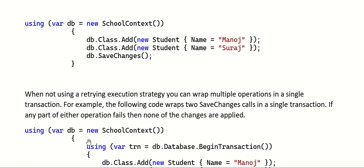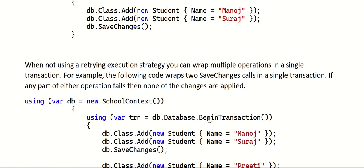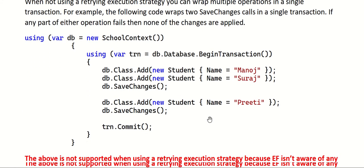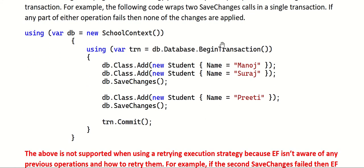When NOT using the retrying execution strategy, you can wrap multiple operations in a single transaction. For example, the following code wraps two SaveChanges calls in a single transaction — if any part of either operation fails, none of the changes are applied. In this modified code snippet I'm not using a retry mechanism, but using the using construct I can make calls to multiple SaveChanges, and this code block will work fine.